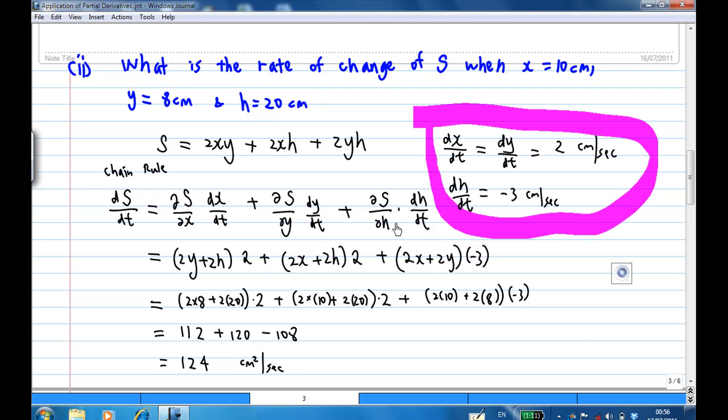∂S/∂x is 2y plus 2h when dx/dt is 2, ∂S/∂y is 2x plus 2h when dy/dt is 2, ∂S/∂h is 2x plus 2y when dh/dt is minus 3.